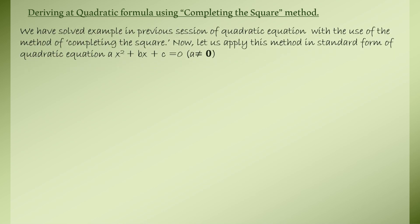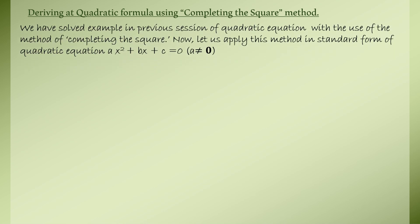Now if you consider the standard equation — this equation stands as we solved earlier as an example — ax squared plus bx plus c is equal to 0, where a is not equal to 0. This is our standard equation. In previous sessions we have seen that some equations will not fall under this polynomial rule, and those are not considered quadratic equations.